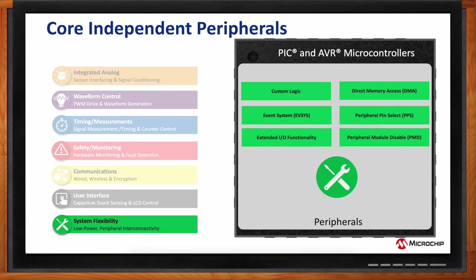System flexibility peripherals allow interconnection with other functionality on the chip. The event system on AVR devices lets you take different peripherals and route them anywhere on the system. Custom logic — available on both PIC and AVR — gives similar capability. Direct memory access (DMA) lets you move information around the chip without the core being involved. The peripheral pin selector (PPS) allows you to dynamically switch signals between pins at runtime, or set and lock them at power-up to prevent inadvertent changes.